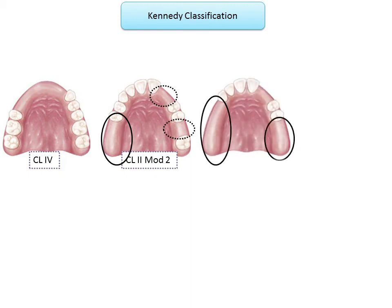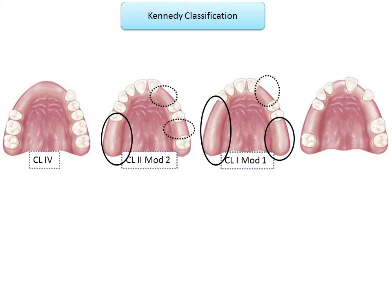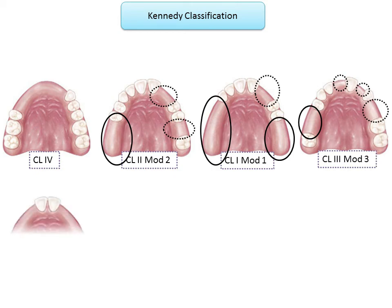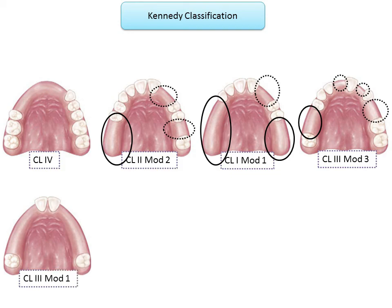In the next image, two edentulous spaces in the posterior region make this Class 1, with one additional edentulous space added as Modification 1 — so Class 1 Modification 1. The following image has four edentulous spaces; the posterior-most, with teeth present both anterior and posterior, is Class 3, with three other edentulous spaces as Modification 3 — Class 3 Modification 3. Another image with two edentulous spaces: one determines Class 3 and the other is Modification 1 — Class 3 Modification 1.